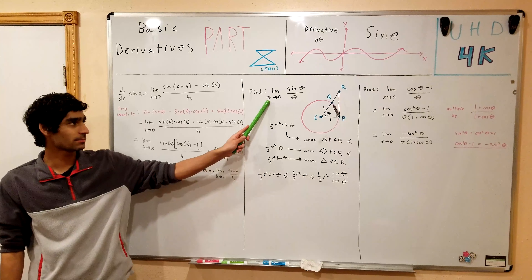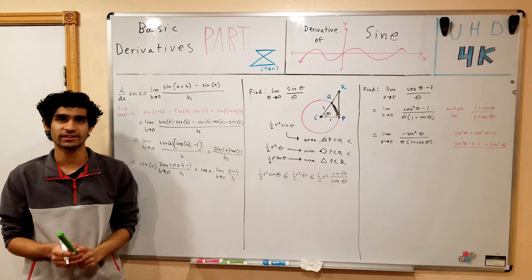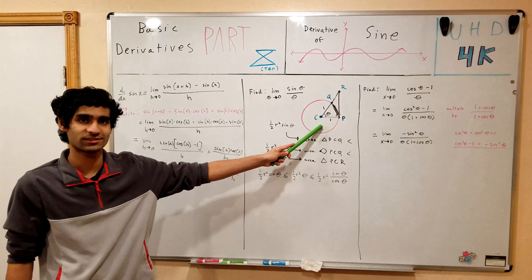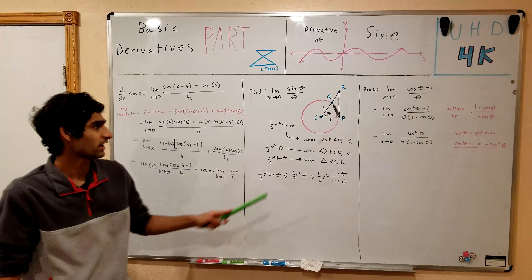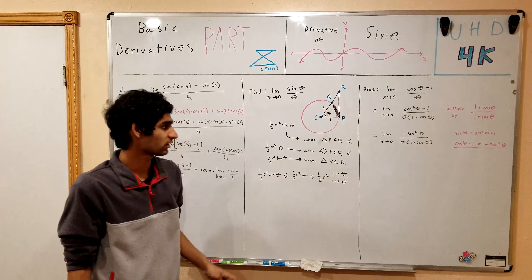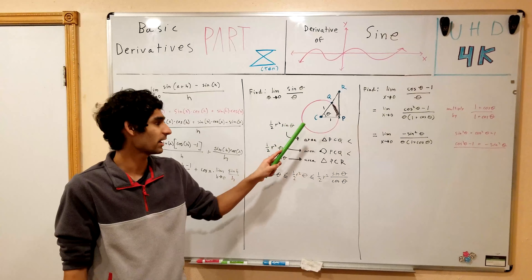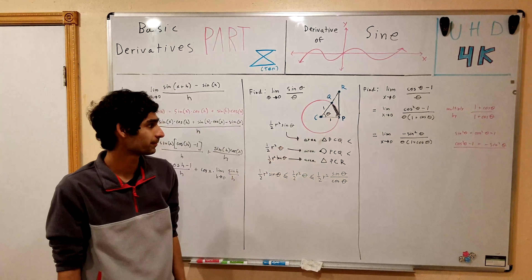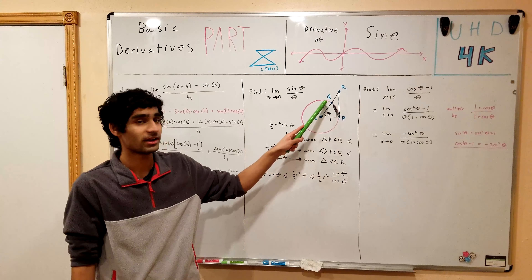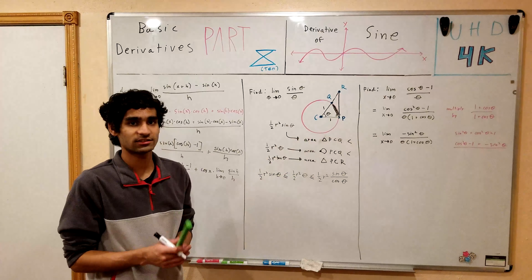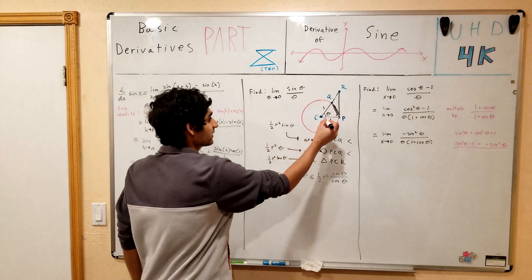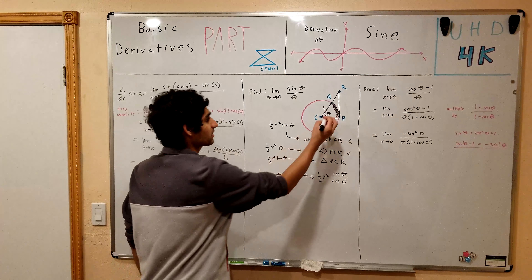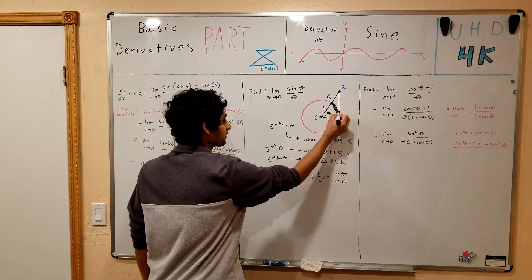First we'll find the limit as theta approaches 0 of sine theta over theta — I'm using theta instead of h for this proof. We have a unit circle, which is a circle with radius 1, with points P, C, Q, and R. We have a triangle PCQ formed by the center C and two points on the circumference P and Q. These three points also form a sector of the circle — basically like a piece of pie. The sector is larger than the triangle because it includes a small extra portion not part of the triangle.